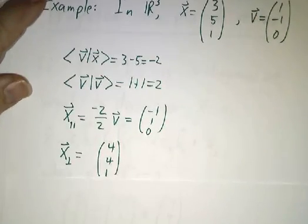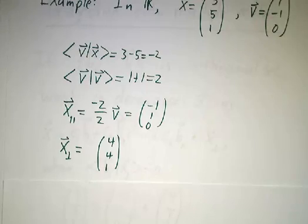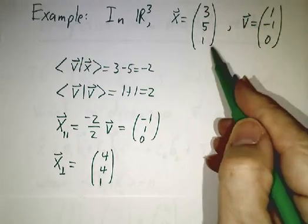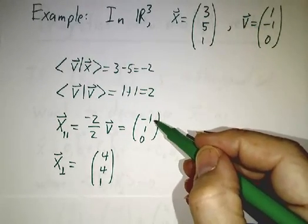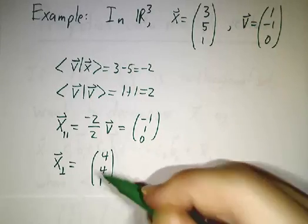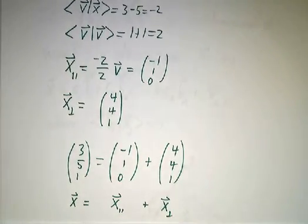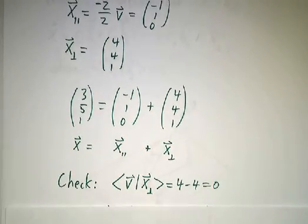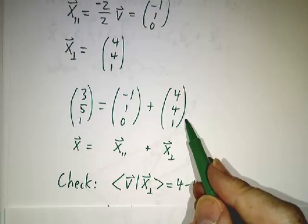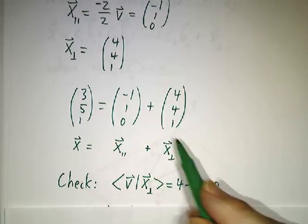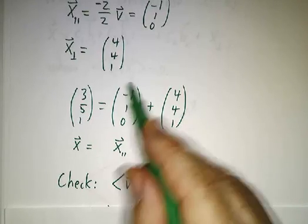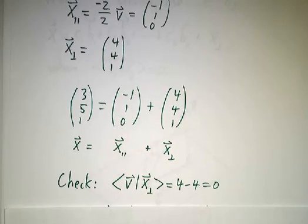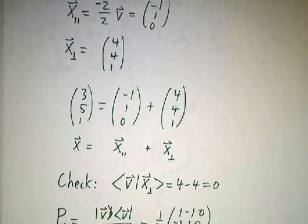And x-perp is what's left over. X-perp is (3, 5, 1) minus (-1, 1, 0), which is (4, 4, 1). And you see that in fact, if you break it down this way, the thing that's left over is perpendicular to v, and x-parallel is parallel to v.